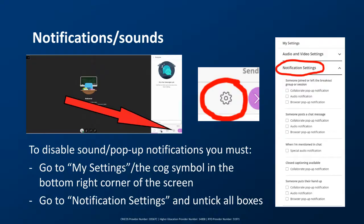Before we get started, I'd just like to let you know there are some notifications and sounds that pop up during Blackboard sessions. So before we start the webinar, if I could ask you to please just disable your sound or pop-up notifications. You can do that by going to the cog symbol or your settings — it should be in the bottom right-hand corner of your screen. Or if you're on mobile, you might need to open the session menu and just untick all of the boxes under notification settings, and that will disable all the sounds and pop-ups during the session.